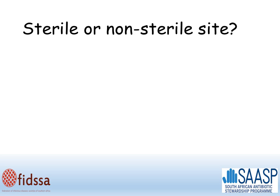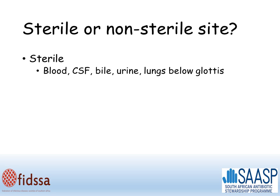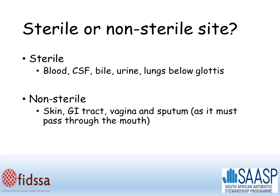When interpreting a culture result, the first thing you need to ask yourself is whether you're dealing with a sample from a sterile or a non-sterile site. Sterile sites are blood, CSF, bile, urine, and the lungs below the glottis are sterile in health, although commonly colonized in people with chronic lung disease. Non-sterile sites are the skin, the GI tract, the vagina, and sputum is non-sterile as it must pass through the mouth, which is part of the GI tract.